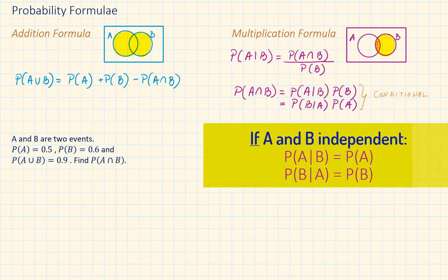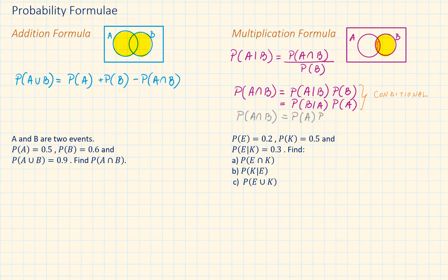We can take this further. When events A and B are independent, then the probability of A doesn't depend on probability of B and vice versa. So the probability of A given B is just going to be probability of A and the probability of B given A is going to be just probability of B because they don't depend on each other. So their intersection is going to be probability of A times probability of B.